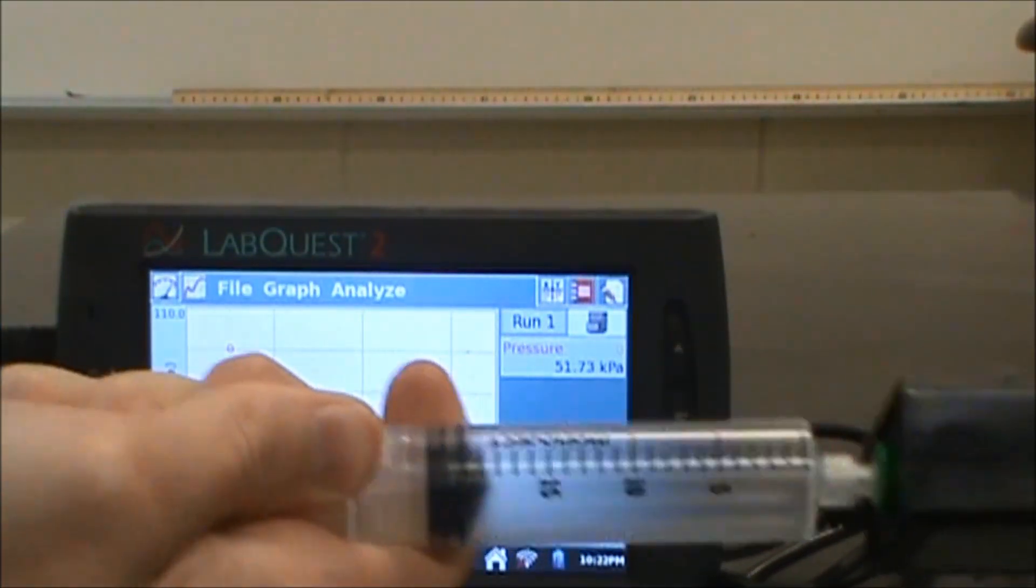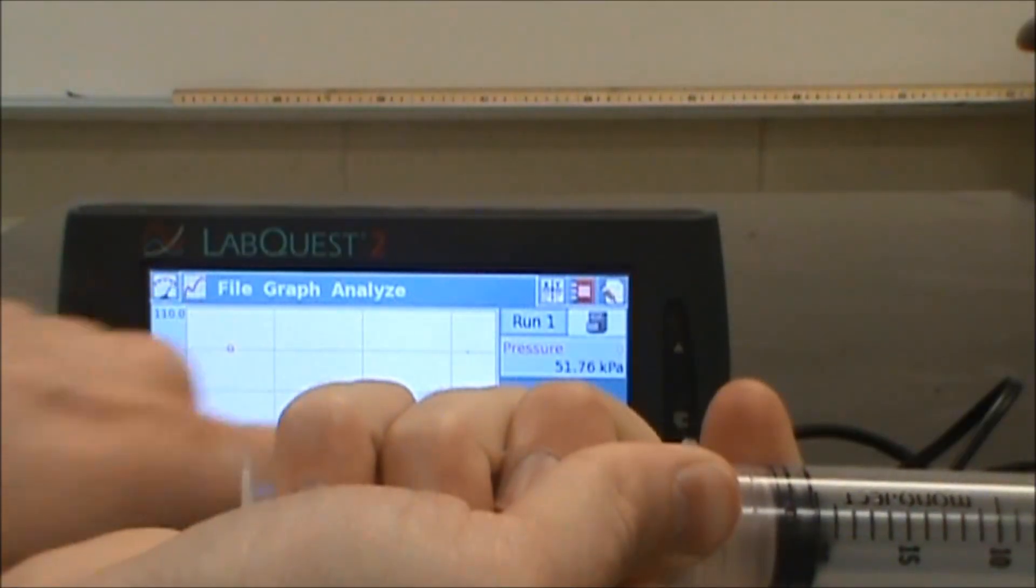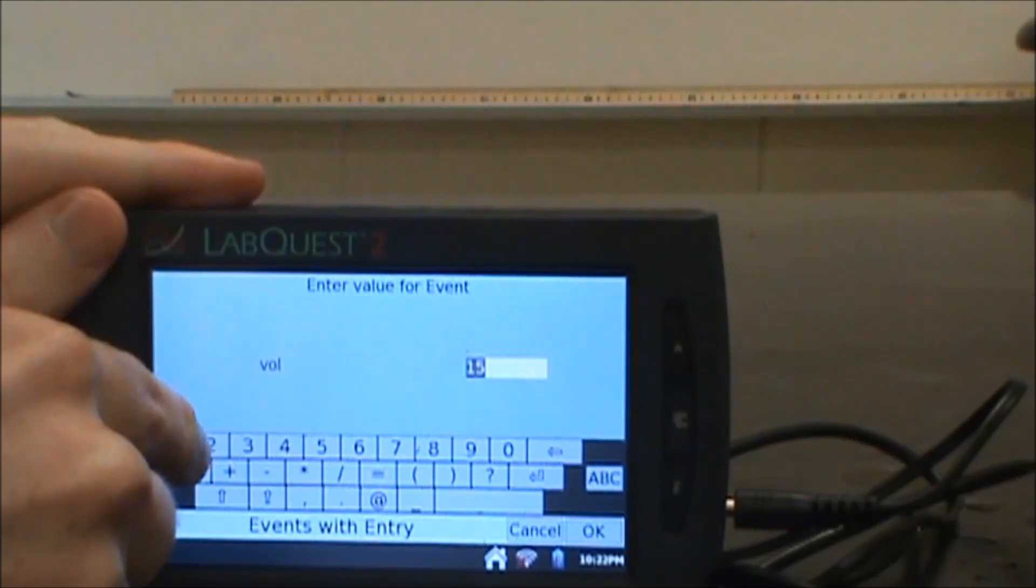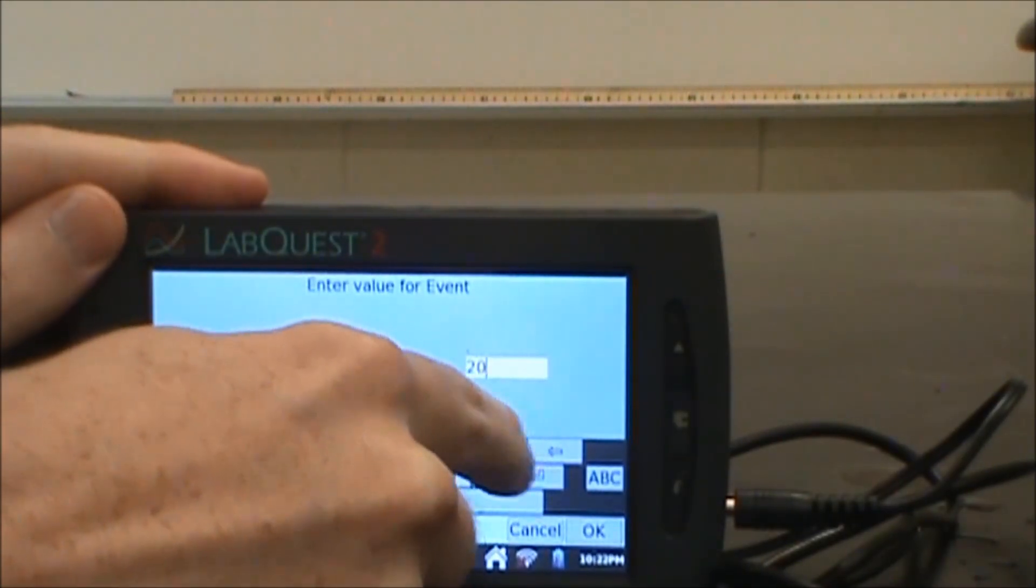I'm going to take this back to 20 now. There's my syringe. I'm going to wait for my pressure to stabilize here. Then I'm going to hit keep. I can let it go. I can put in that it was at 20 milliliters.